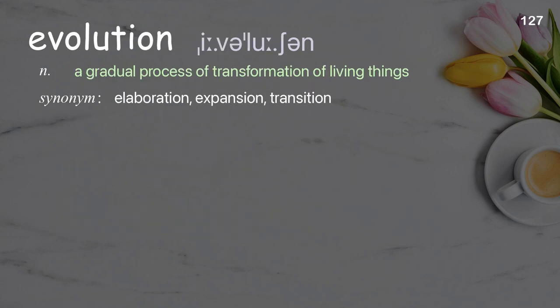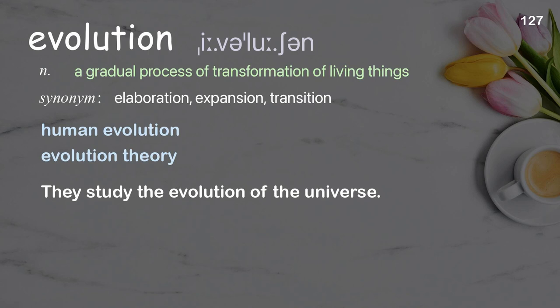Evolution: a gradual process of transformation of living things. Examples: human evolution, evolution theory. They study the evolution of the universe.